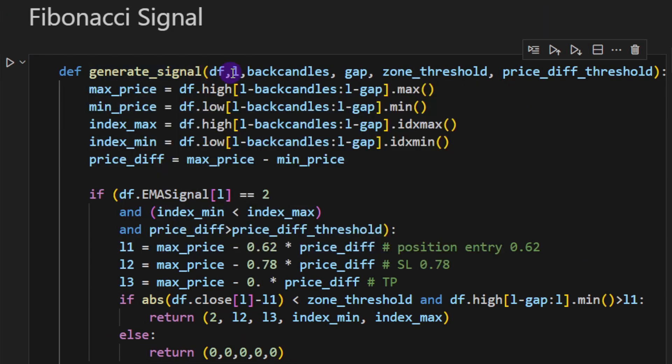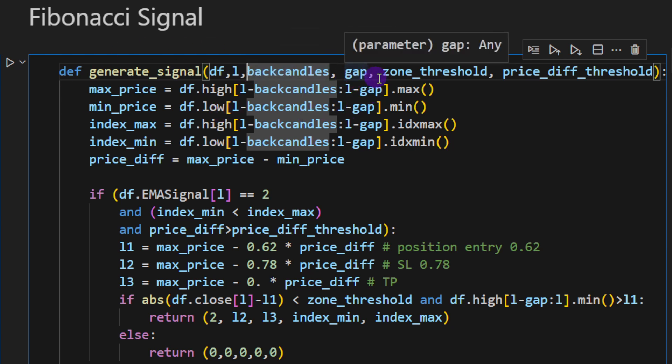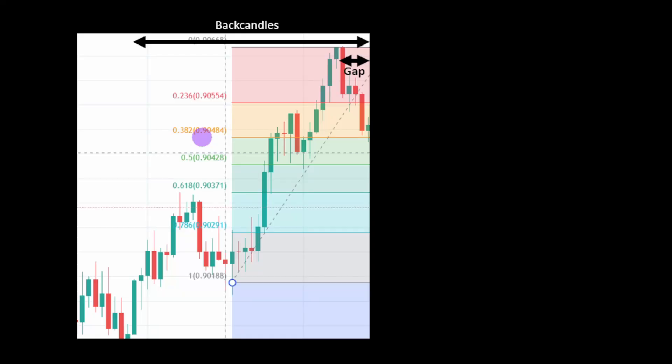Now we can generate our Fibonacci signal. This is done in this function—generate signal. It takes dataframe, the index of the current candle to test if it's a signal candle, back candles, the number of back candles to check, the gap (we're going to explain what the gap is), the zone threshold, and the price diff threshold.